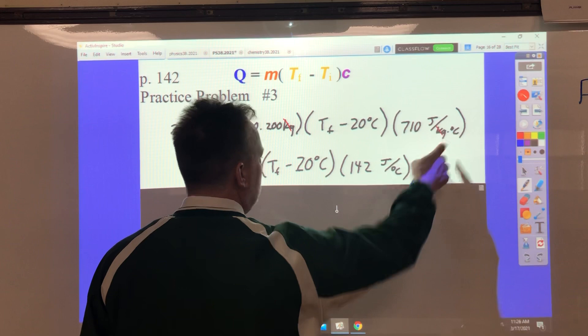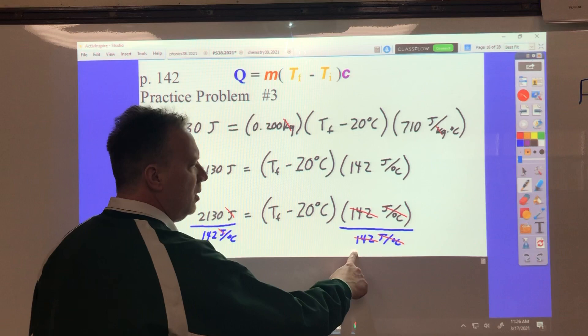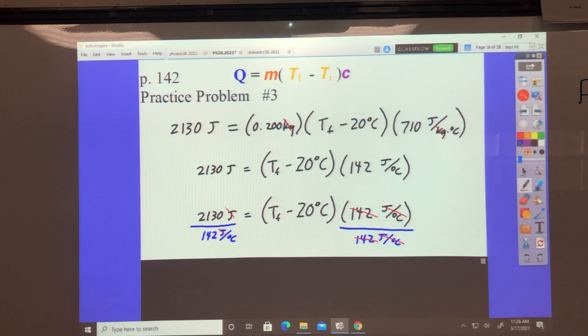So now what we can do is divide by the 142 joules per degree Celsius. Notice how my kilograms go on, but I still have the joules per degree Celsius. When I divide over here, we'll see what happens. Okay. I divide both sides by 142 joules per degree Celsius. That cancels the unit, cancels the 142, but I forgot to do this again.